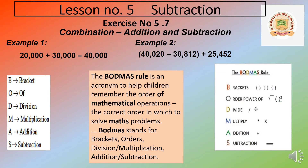Next, if the problem has division, we divide first after solving brackets. Then we do multiplication, then addition, and lastly subtraction. So when we see a question, first check if there is a bracket — simplify it first. For our syllabus we only have addition and subtraction, so in example A, the question is 20000 plus 30000 minus 40000. We add first, then subtract.